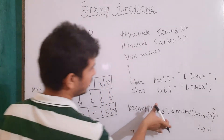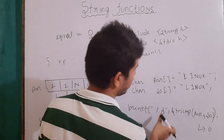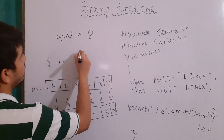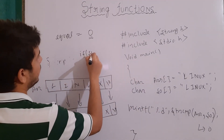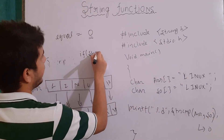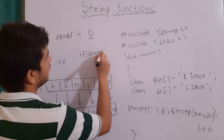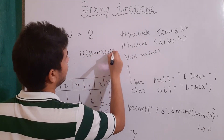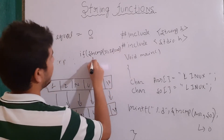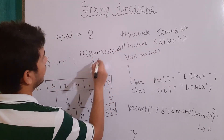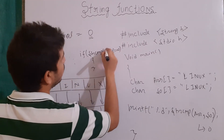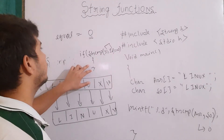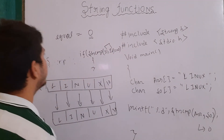We generally use strcmp in an if condition — something like: if(strcmp(string1, string2) == 0), that means both of these strings are equal, and according to this we will perform some operations.